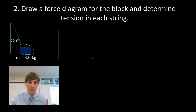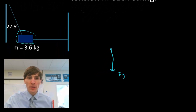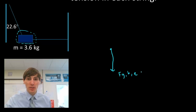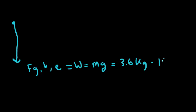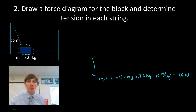I'm going to draw a force diagram. A dot is going to represent my block. I know that it's in the presence of the Earth, so I have a pull from the Earth — we'll call this the force of gravity on my block by the Earth. The force due to gravity, called weight, equals mass times gravitational field strength. The mass is 3.6 kilograms, multiplied by 10 newtons per kilogram, giving us 36 newtons. So I can label this 36 newtons.